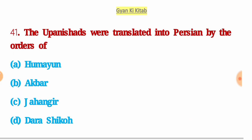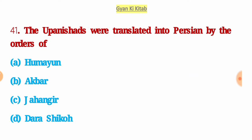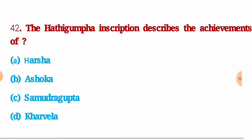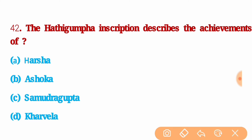Next question: the Upanishads were translated into Persian by order of — the right answer is option D: Dara Shikoh. Next question: the Hatigumpha inscription describes the achievement of — the right answer is option D: Kharavela.